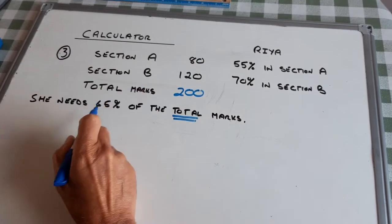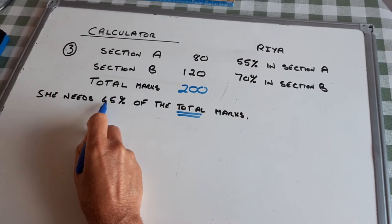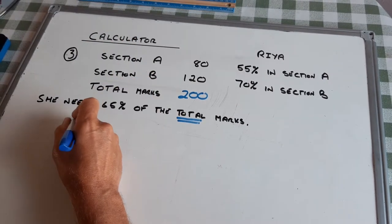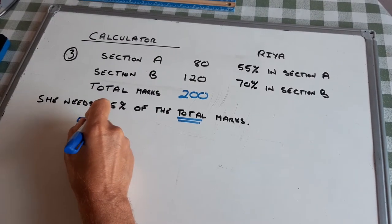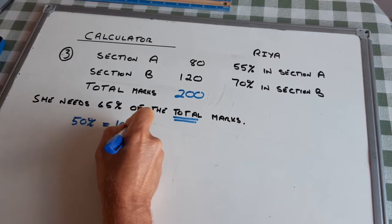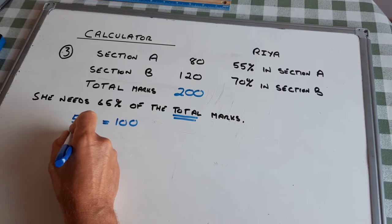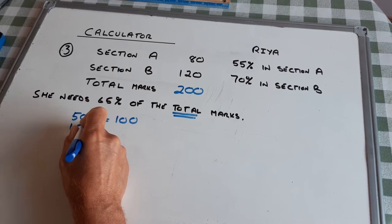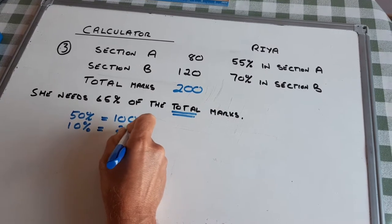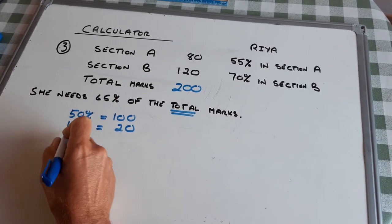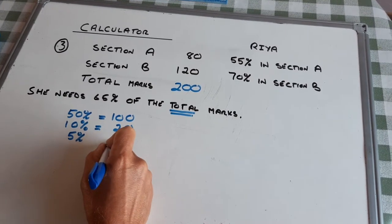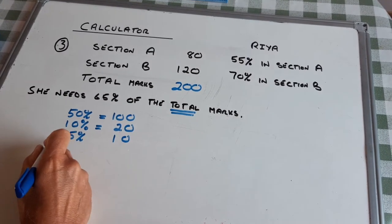So I need 65% of 200. 50% is a half, is 100 marks. 10% means divide by 10, so that's 20 marks. 5% is half of 10%, so that's 10 marks.